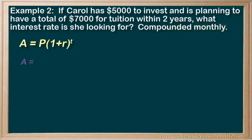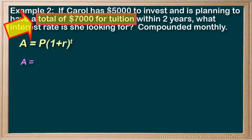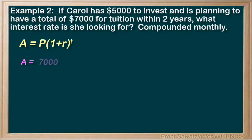A equals the amount at the end of the loan. And in this question, Carol is hoping to have a total of $7,000 for tuition in 2 years. So the amount at the end of the loan must be $7,000. Our principal is $5,000. Our interest rate, that's our unknown. T, our investment is for 2 years, but compounding monthly means 2 times 12, or 24 compound periods.